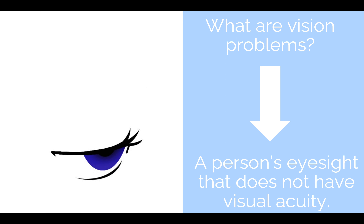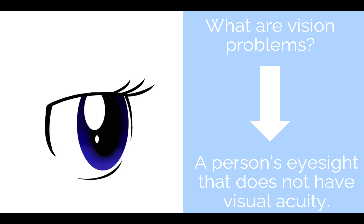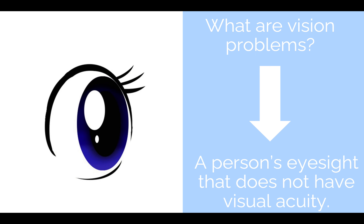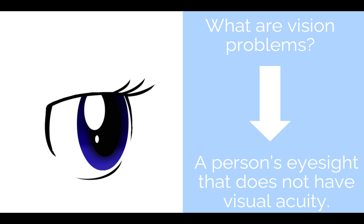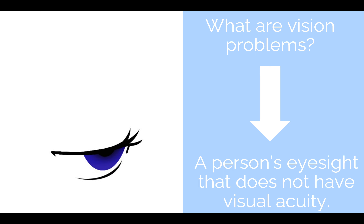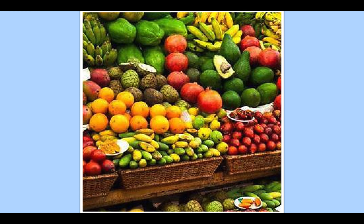A form of vision problems is colorblindness, where people may have trouble distinguishing certain colors. For example, let's pretend that you're teaching a lesson about balancing nutrition and incorporating vegetables in your diet, and you show this picture to your students. You ask them to identify all of the red vegetables in the picture.